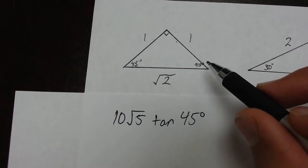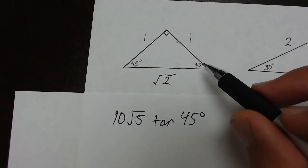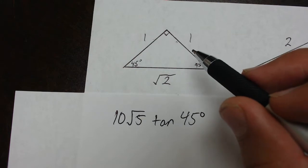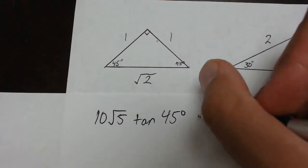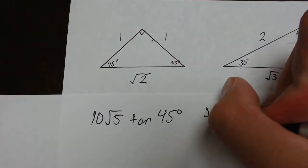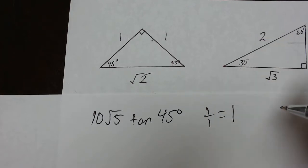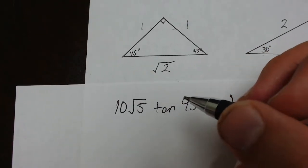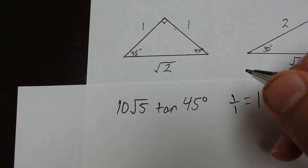Tangent of 45 is going to be opposite over the adjacent. So if I look at the 45 degree angle, the opposite side is going to be 1, the adjacent side is going to be 1. So the tangent of 45 is going to equal 1 over 1, or just 1. So 1 times 10 times the square root of 5 is just 10 root 5.